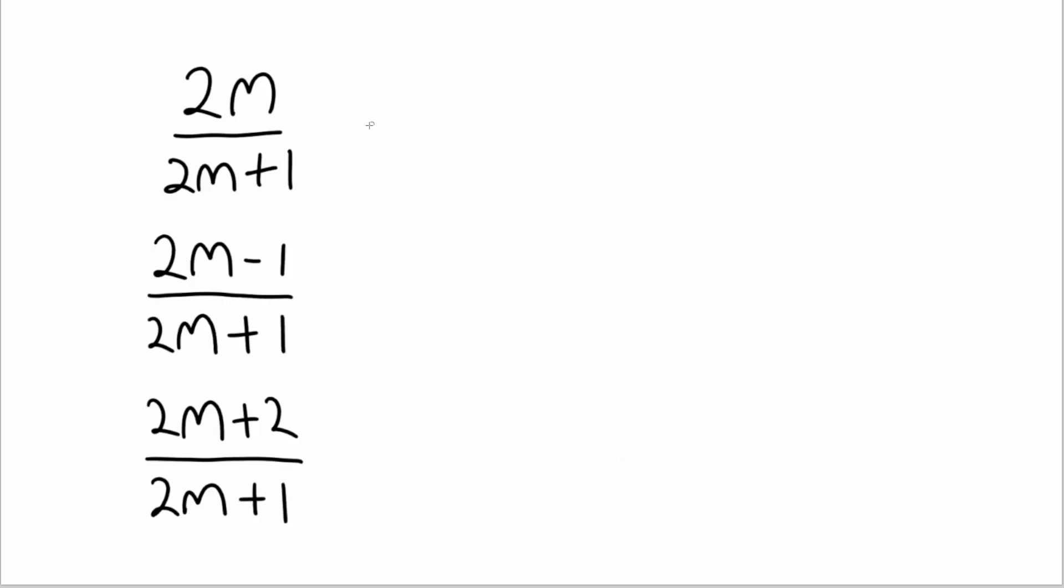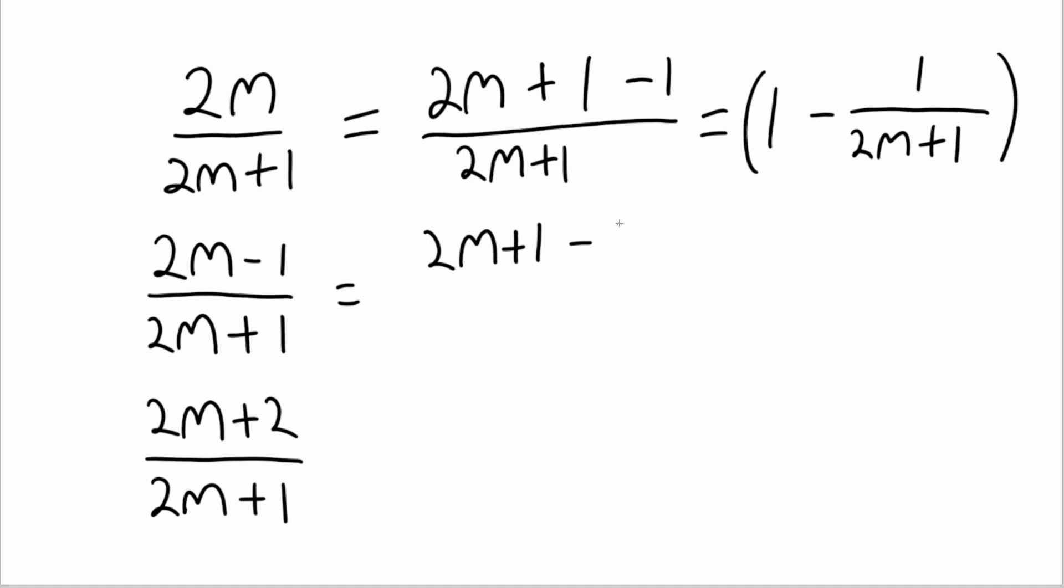Now by strategically adding some zeros, we can pretty easily make these terms much more convenient. Our goal is to create a 2m plus 1 term in the numerator of each fraction. So for 2m, we can add and subtract 1. For 2m minus 1, we can add and subtract 2. And for 2m plus 2, we can subtract and add 1.